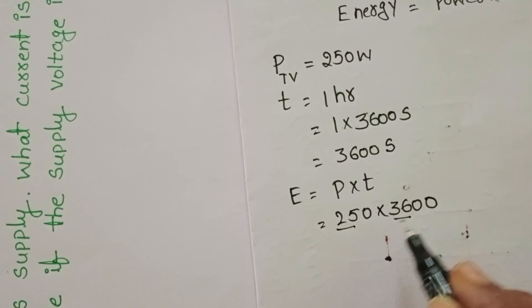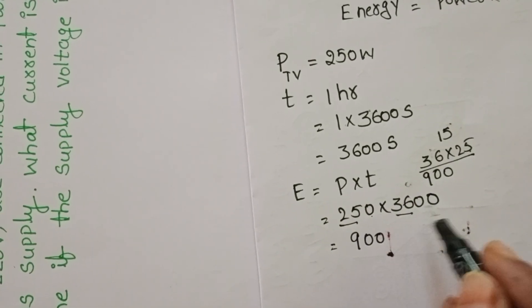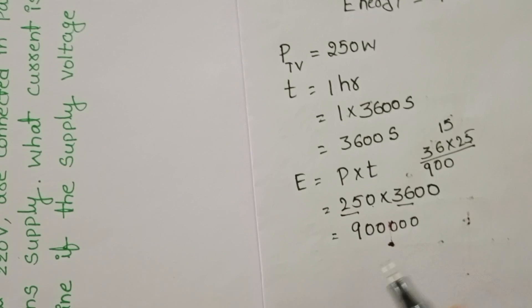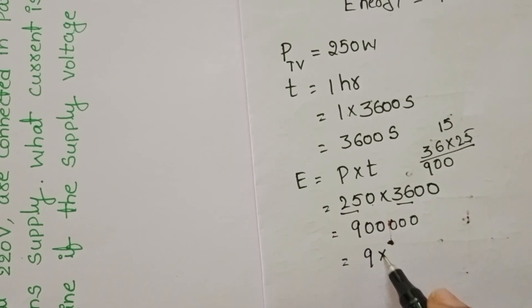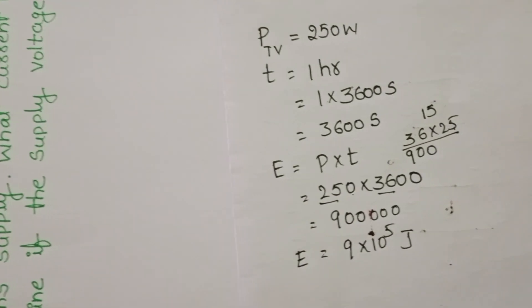Multiply 25 and 36: 900, and here 3 zeros there. Now write 9 into 10 power 5 Joule. Joule is the SI unit of energy.